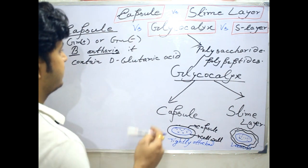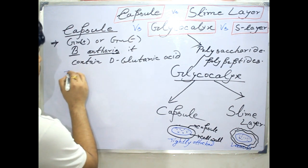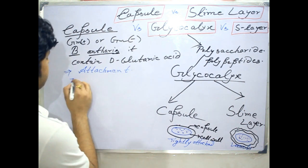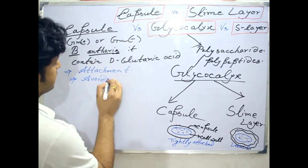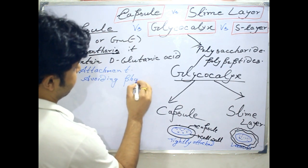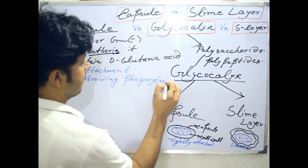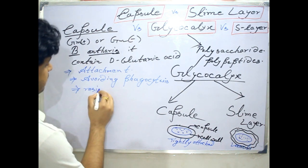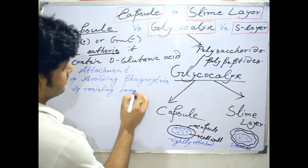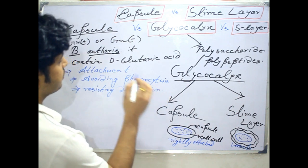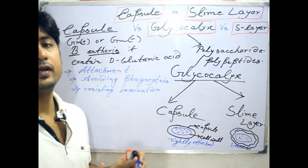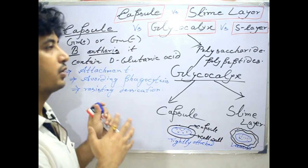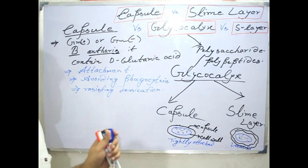The capsule can also help in attachment, avoiding phagocytosis, and resisting desiccation. Because the capsule contains water, it helps the bacteria avoid any kind of environmental desiccation situation. These are the few common and important points about capsule. Now I'm going to the slime layer.